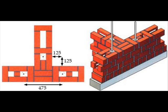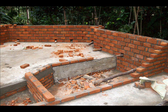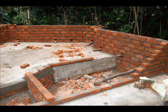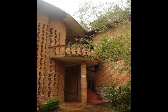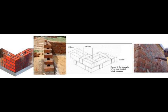It has been tested and proven during the past 40 years in India. This thickness of rat trap bond wall is equal to the standard 10 inch thick brick wall but consumes 20% less bricks. In a conventional English bond, 350 bricks are required per cubic meter, whereas in rat trap bond only 280 bricks are required.